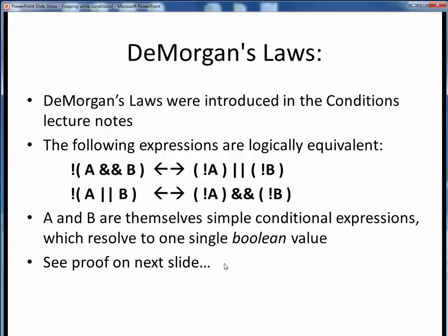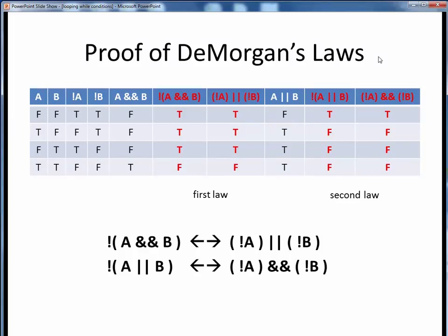Earlier we said that you'd just have to take these on faith for now, but now let's see the proof. So here's a tabulated proof of DeMorgan's laws, which are shown again on the bottom. Let's say that we have two conditional expressions, A and B, here on the left, whose values can each be either true or false, giving us these four possible logic combinations.